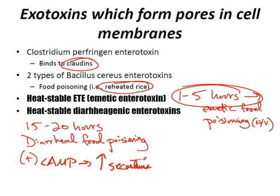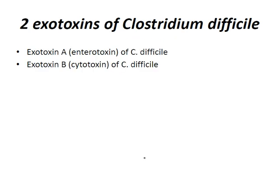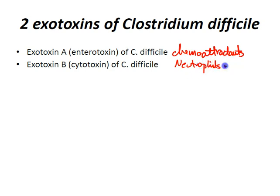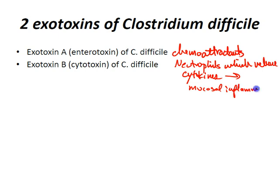We have two exotoxins of Clostridium difficile. Exotoxin A is an enterotoxin — it's a chemoattractant that attracts neutrophils, which release cytokines, which leads to mucosal inflammation and GI fluid loss.